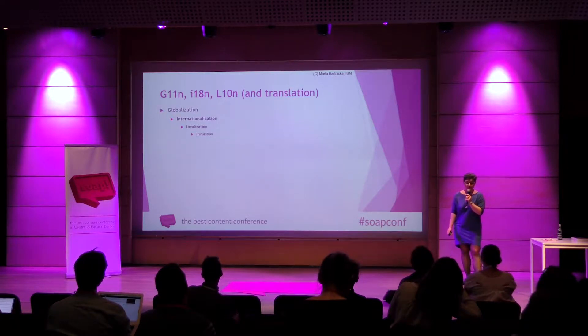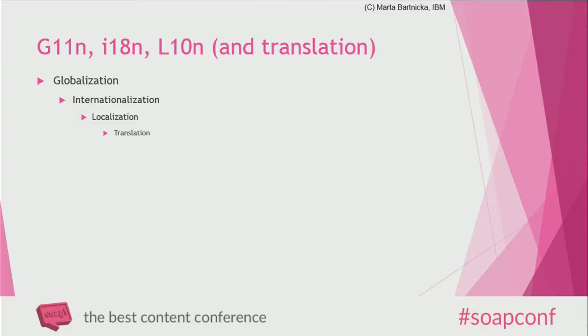Those are the basic terms I will be using, and I will probably use them in a very free manner, so you don't have to memorize them too much. Globalization is about producing content and products that can be sold all over the world. Internationalization is the more technical aspect — what you need to do to the product so that it fits a global audience, not necessarily ever translated into any language. Localization is to fit the product to certain markets. And translation is translation.